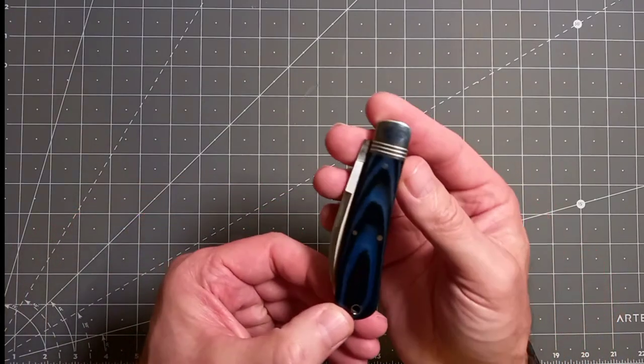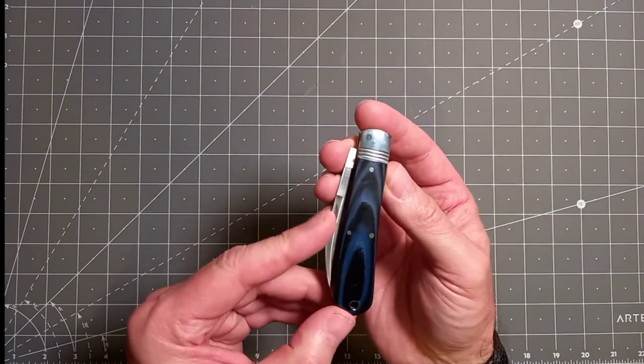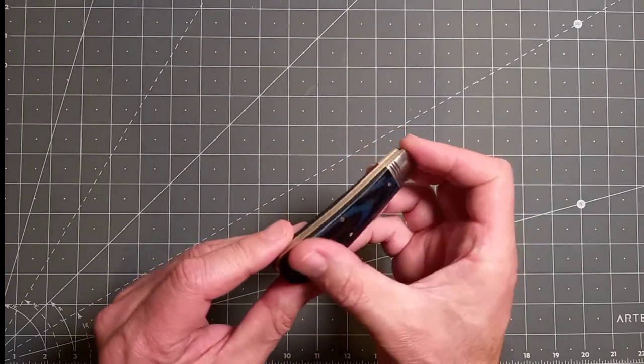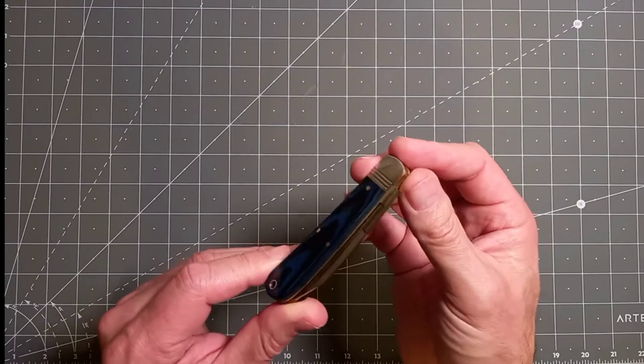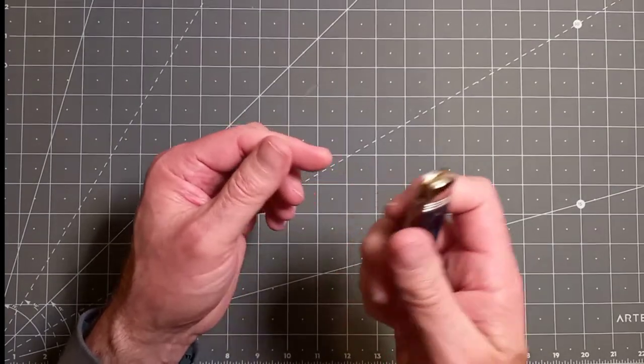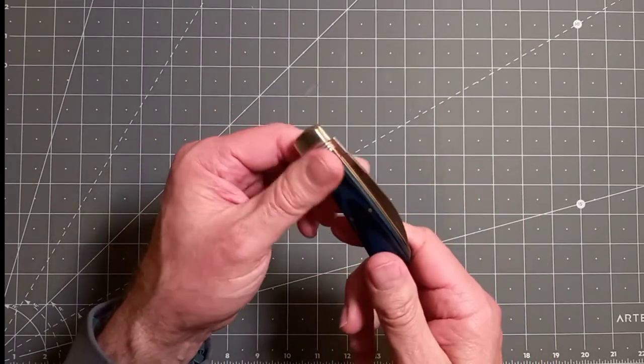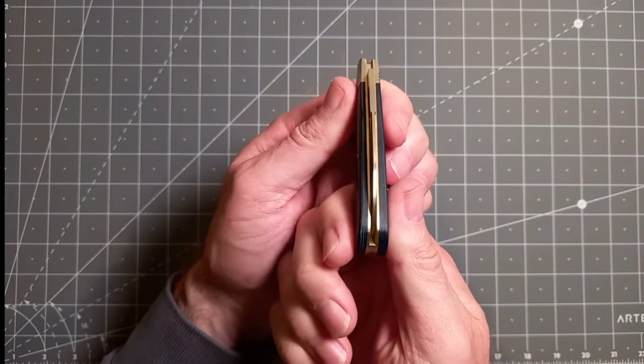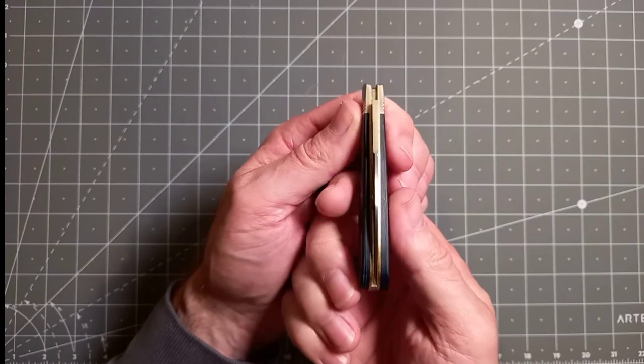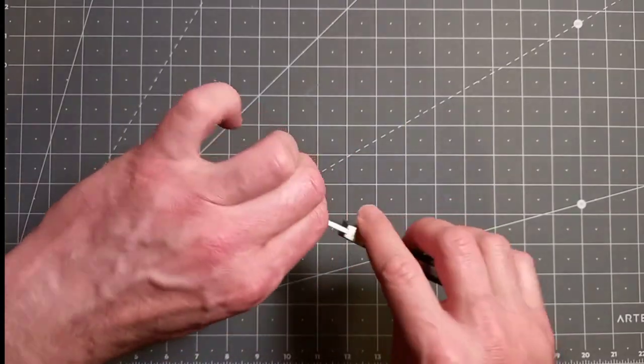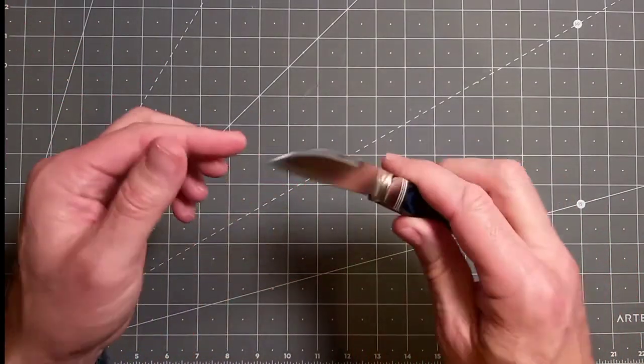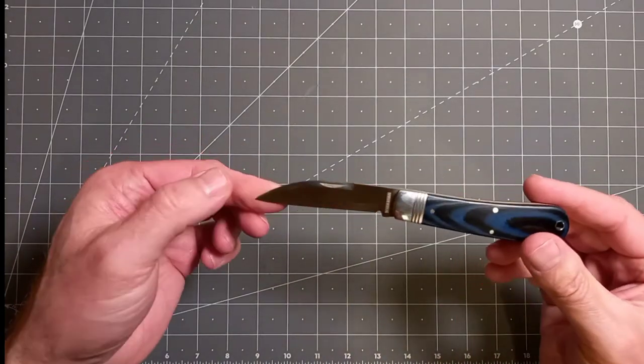There you go, look at that. Oh yeah, first impressions, that's nice. Look at that swedge. Nice backspring, good. I'm quite impressed with that, that's really nice. I love this sway back. Blade centering absolutely down the middle, bang on, which is always nice.